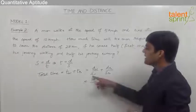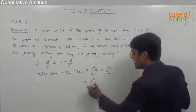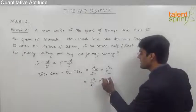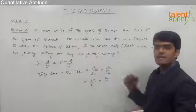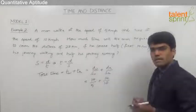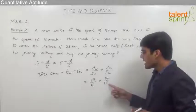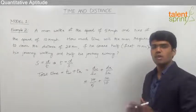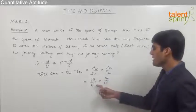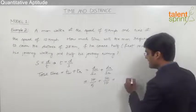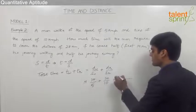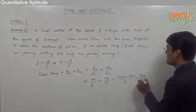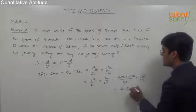Substituting: 14 divided by 5 (walking speed) plus 14 divided by 10 (running speed). Since distances are in km and speeds in km/h, the result is directly in hours. Taking LCM of 10: (2×14 + 1×14) divided by 10 = 28 + 14 = 42 divided by 10 = 4.2 hours. The total time required is 4.2 hours.